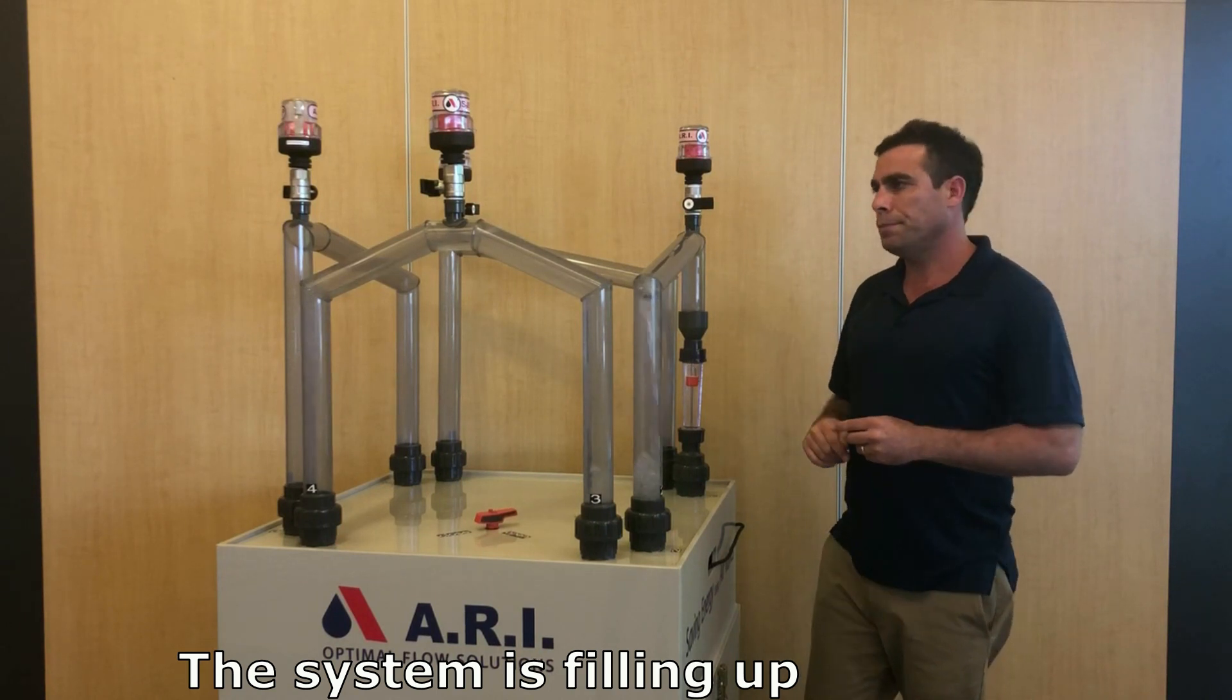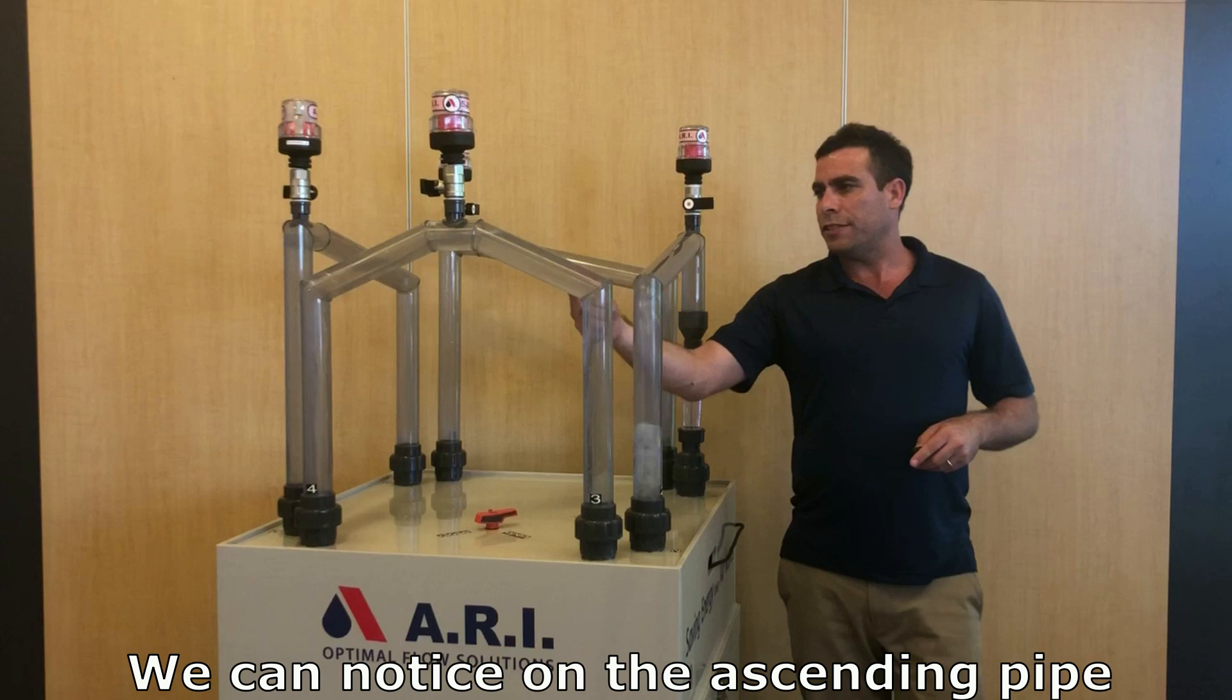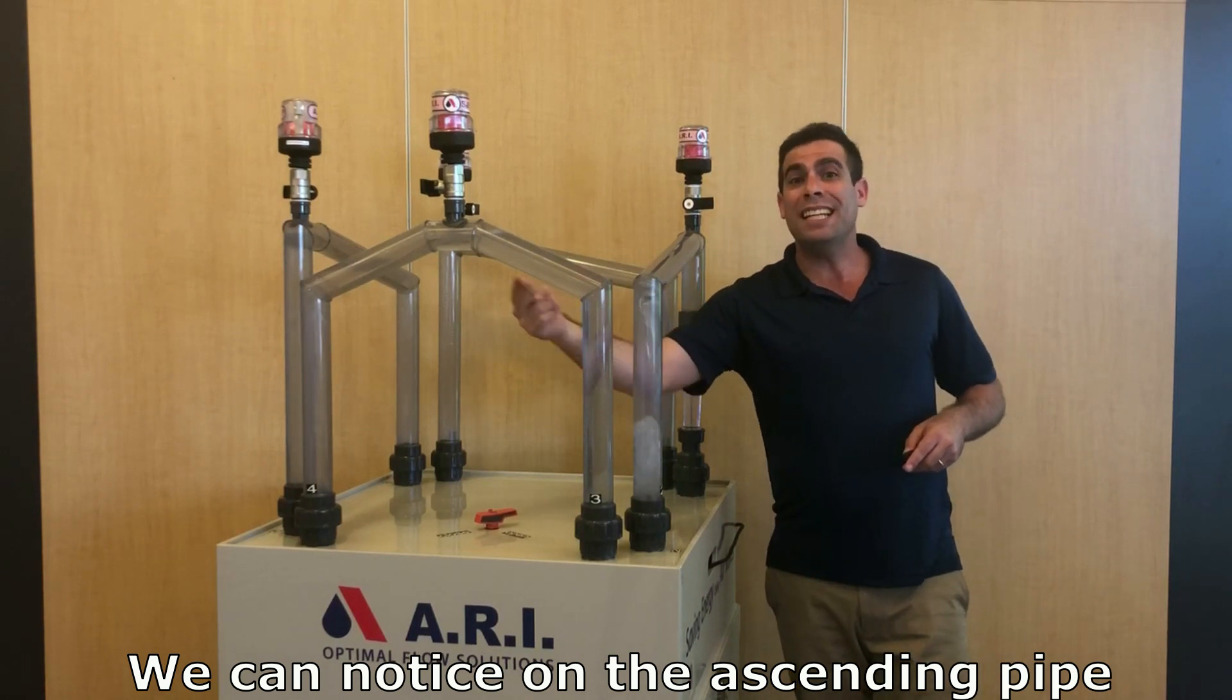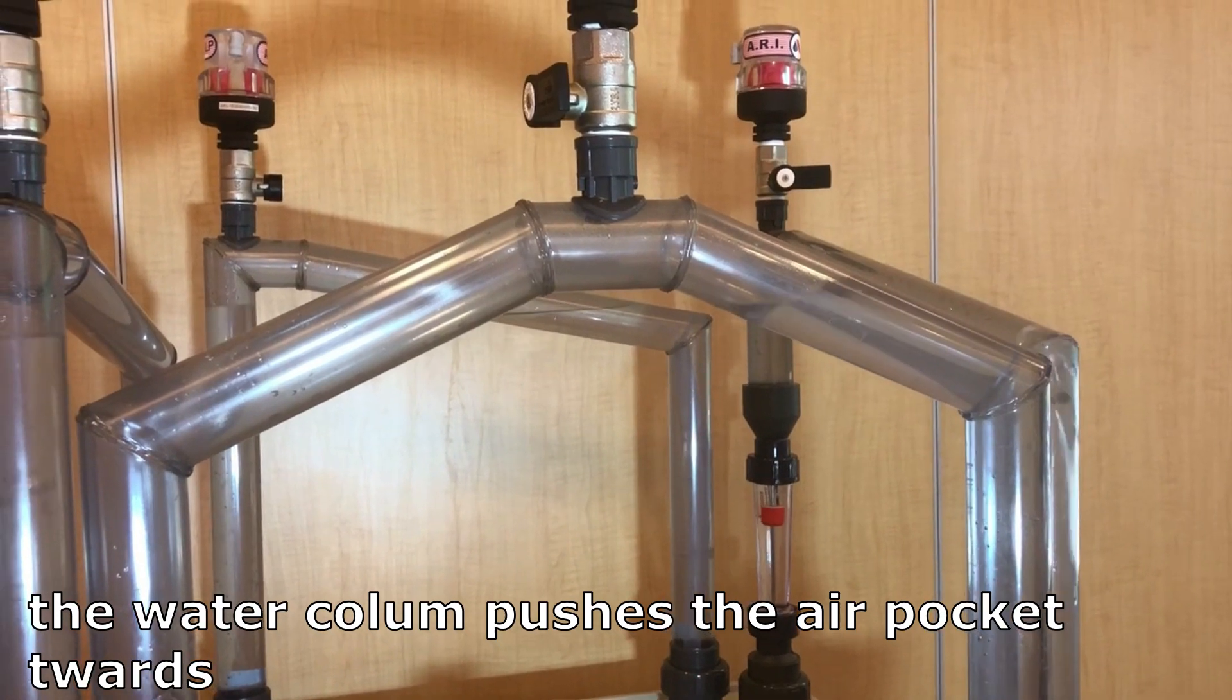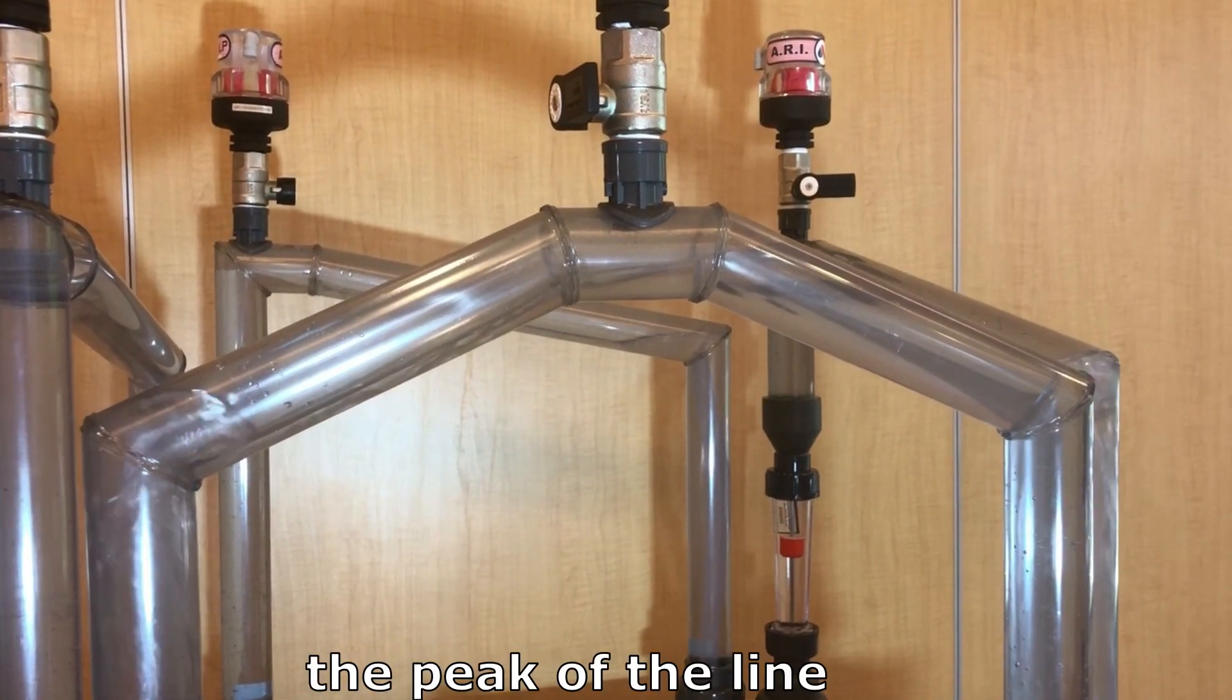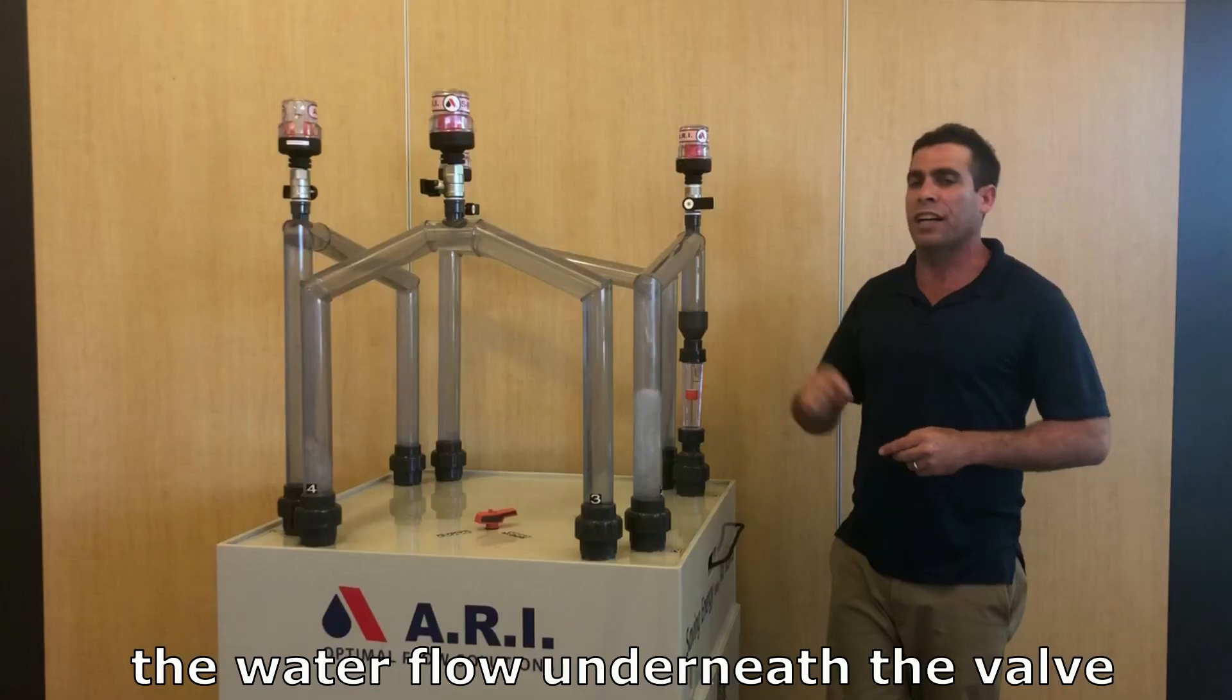The system is filling up. We can notice on the ascending line, the water column pushes the air pocket towards the peak of the line and we can see the air pocket restricts the water flow underneath the valve.